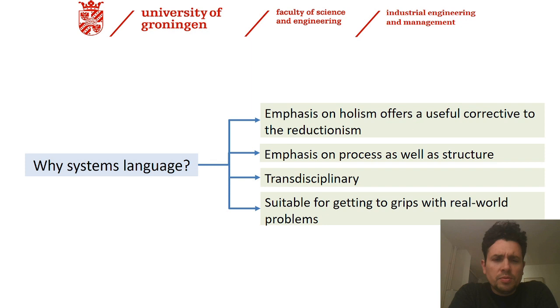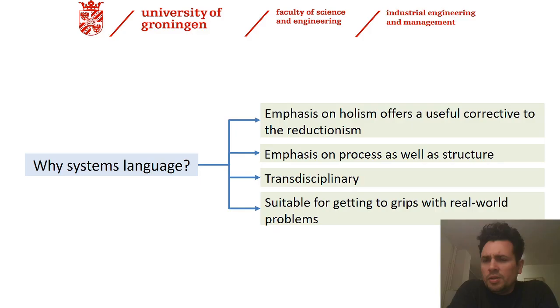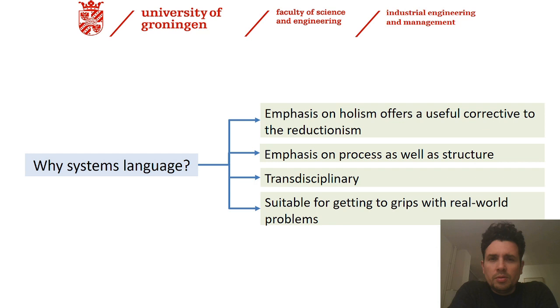There are four reasons by which we should be thinking in systems — reasons that foster the systems language. First, it's a correction to reductionism, meaning that most of our models, if not all of them, are always far from reality, and the complexity of different actors when addressing a model is not always addressed. We should take a look at the problem with a more holistic approach, thinking not only about the process but also the structure, with openness for different approaches to addressing complex problems.